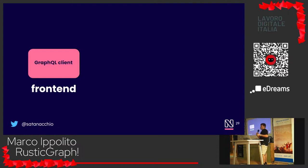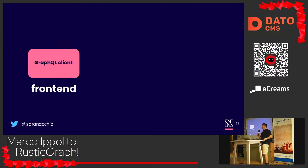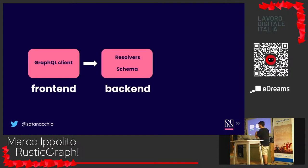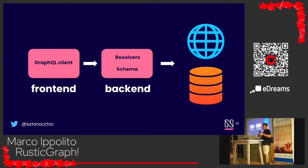A typical GraphQL application looks like this: you have a GraphQL client written in whatever framework you use — React, Vue, Angular, whatever you want. You have a backend server containing the resolvers and the data schema. And you have third-party APIs and databases. This is the simplest representation of a GraphQL application.